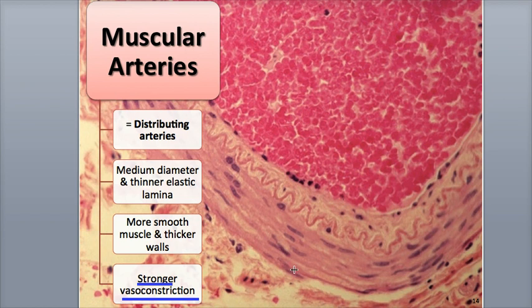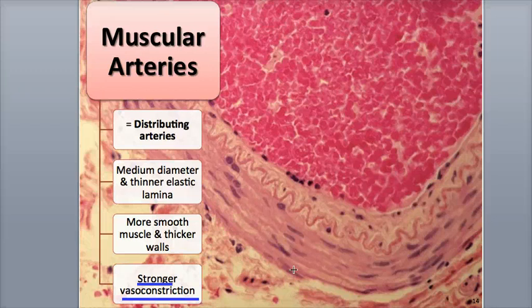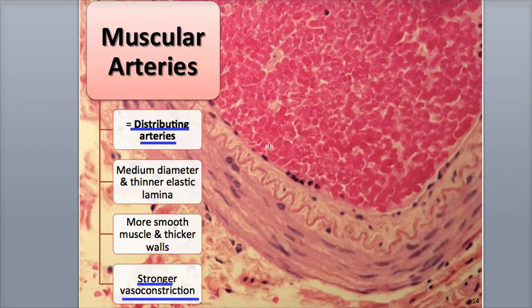The smooth muscle can stay contracted, creating a state of vascular tone that helps maintain blood flow and vessel pressure. Examples of muscular arteries include the brachial artery in the upper arm and the radial artery in the forearm. They are also called distributing arteries because they branch extensively, delivering blood to the body organs and peripheral limbs.